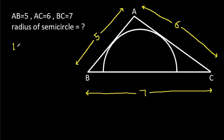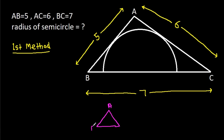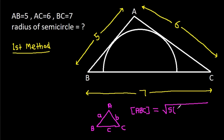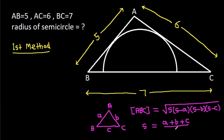The first method: in any triangle ABC, if the side lengths are A, B, and C, then the area of ABC equals the square root of S times (S minus A) times (S minus B) times (S minus C), where S equals (A plus B plus C) over 2.